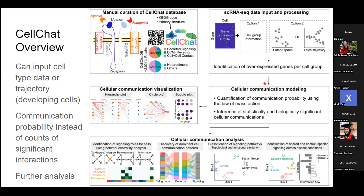Instead of counts of significant interactions, CellChat calculates this communication probability, which we'll talk about in depth. They have built-in visualizations — a similar bubble plot, circle plots, hierarchy plots — and then they go further with network analysis, pattern analysis, and clustering of signal types. They also allow for comparison across conditions, like healthy versus disease, which CellPhone does not have built in. CellPhone authors just say to run it for two different datasets and compare yourself.